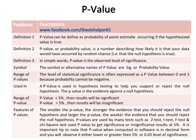Features of p-values: the smaller the p-value, the stronger the evidence that you should reject the null hypothesis. The larger the p-value, the weaker the evidence that you should reject the null hypothesis.